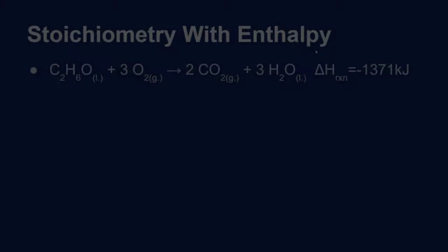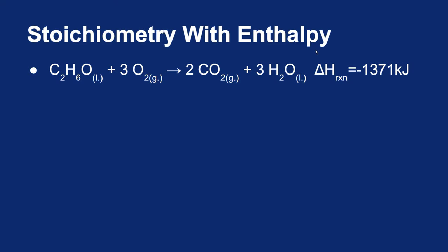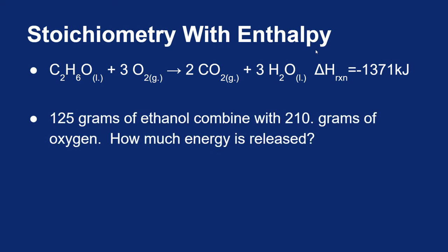Let's do one more problem using the same reaction, but this time let's do the full stoichiometry. We'll find the limiting reactant and use it to determine the answer. If we're given 125 grams of ethanol and 210 grams of oxygen, we should be able to determine how much energy will be released.